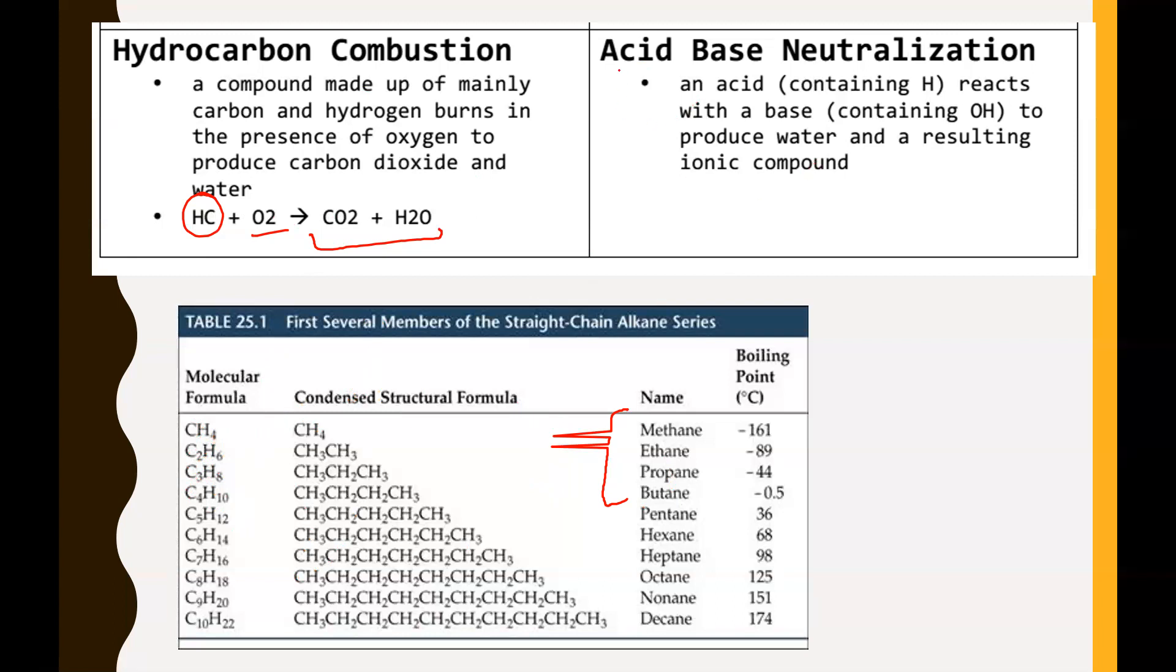The other type of reaction that we just started looking at right before the lockdown was acid-base neutralization. So this is where you have an acid, which contains an H, an H ion really, combining with a base which is going to contain an OH ion. And this will always produce water and a resulting ionic compound. Now just in case you've forgotten that resulting ionic compound we always called a salt. Doesn't have to necessarily be NaCl. So in other words, it doesn't have to be sodium chloride. It just has to be some form of salt which is what forms when you mix an acid and a base.